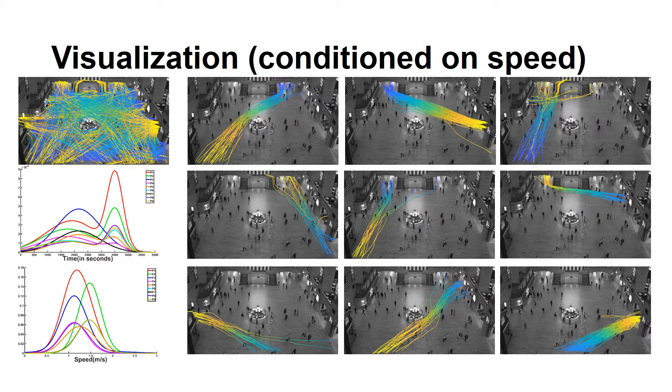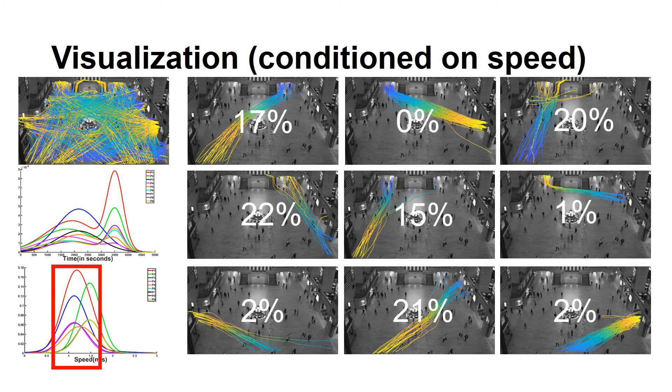Similarly, if the users are interested in a speed range, our method can also show how prominent each space flow is within that speed range. In this case, the user is interested in a speed range around 1.1 meters per second. We show the prominence of different space flows in the form of percentages. This is very helpful in identifying, for example, in what areas people in general tend to walk slowly or fast.